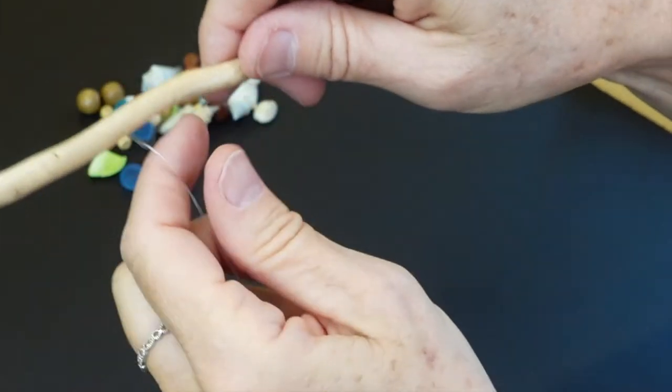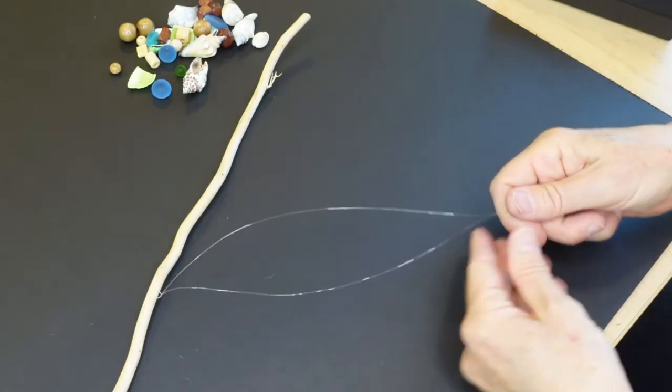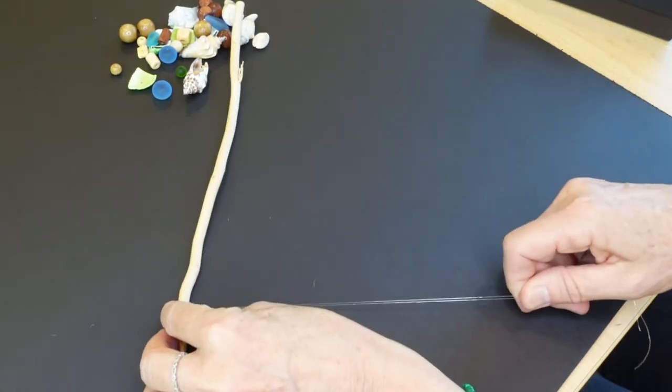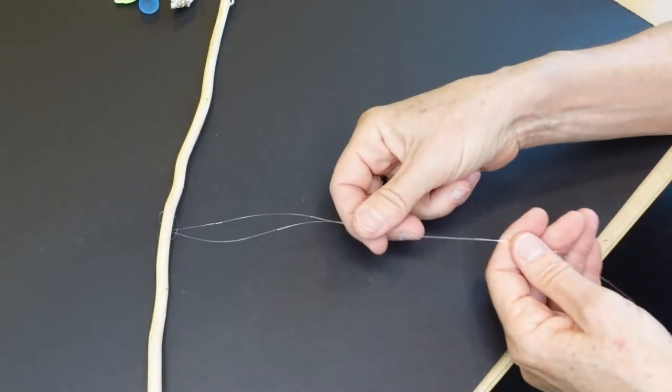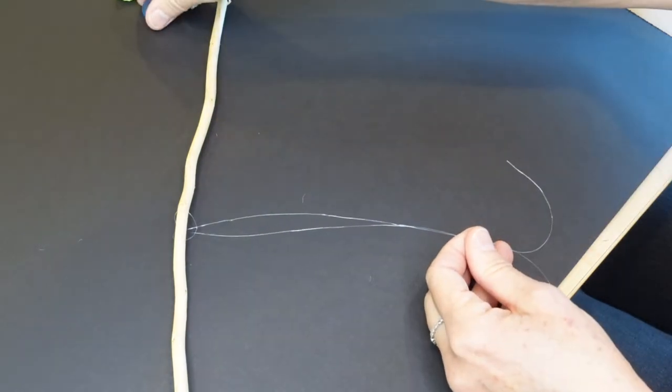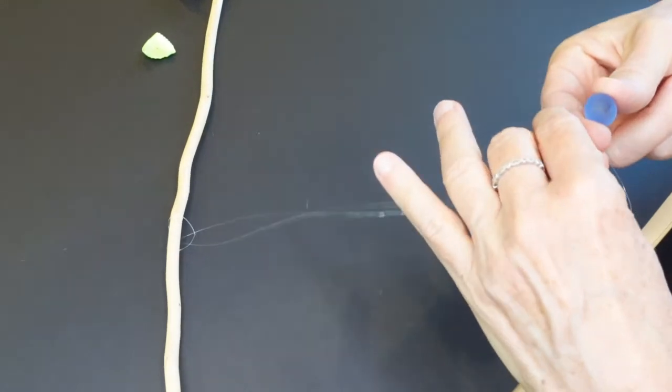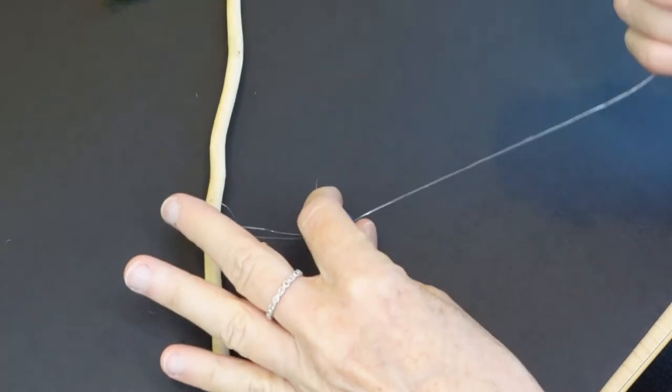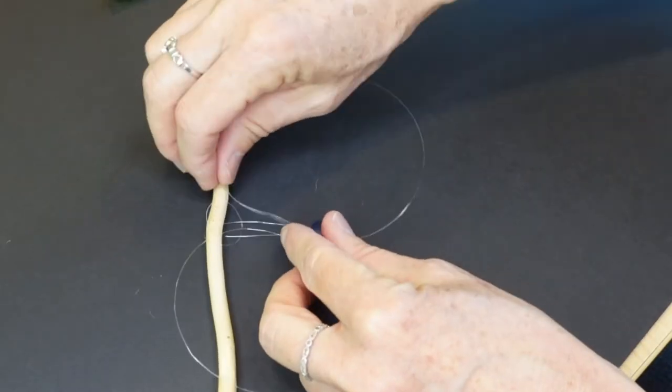Next, start stringing your materials onto the doubled cord. We're using the doubled cord to make it a little bit more sturdy. So there's no right or wrong way to do it. I'm going to start with this beautiful blue sea glass bead. Put it through the end. Find a good place for it. Works for me. Then we're going to feed the ends through.